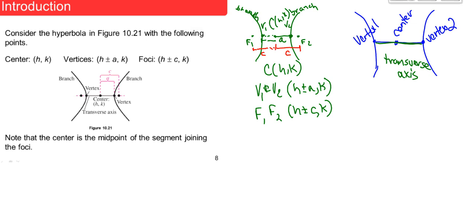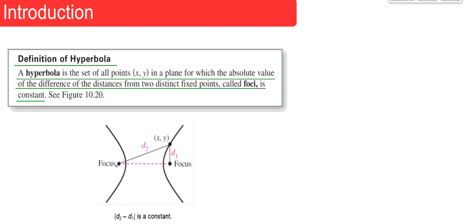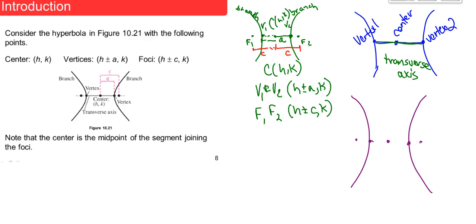The distance from the focus to the branch and back to the other focus is what we're finding the difference of. Going from focus 1 to the branch, I'll call that D1, and from focus 2 to the branch, I'll call that D2. These distances are laid out along the transverse axis, with A being center to vertex, and C being center to focus.